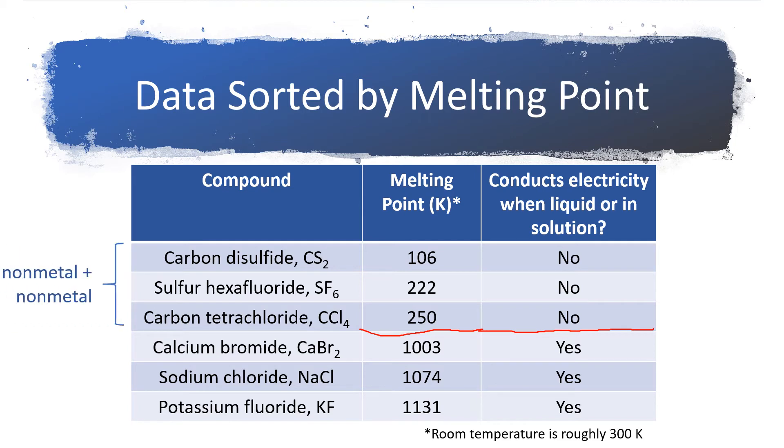And if you look at the elements that make these up, the things that melt at low temperatures are made up of a non-metal plus another non-metal. And the ones that melt at the higher temperatures are made up of a metal plus a non-metal. And then it turns out that those low melting things have covalent bonding and the high melting compounds have ionic bonding.